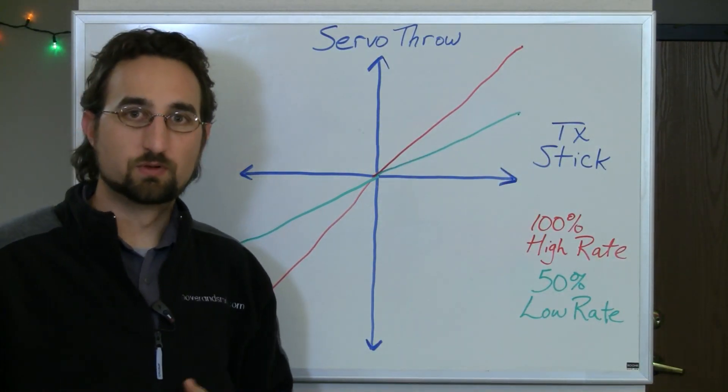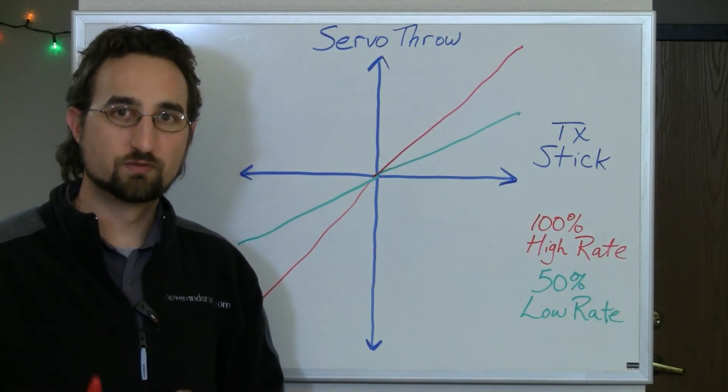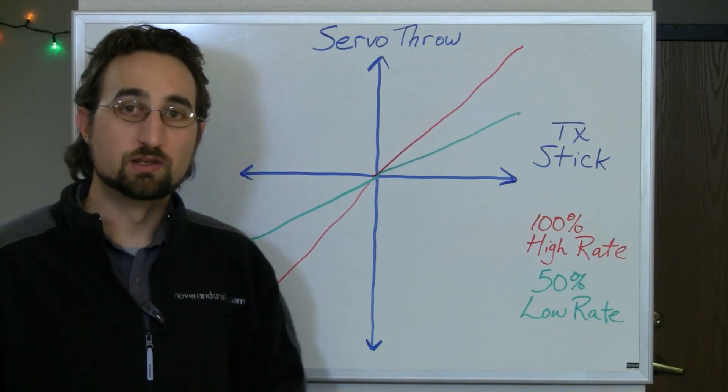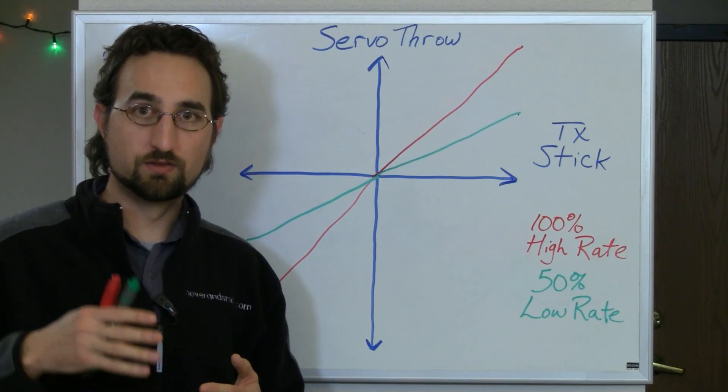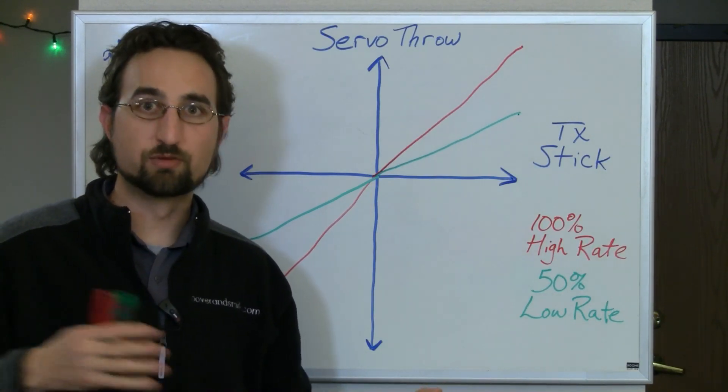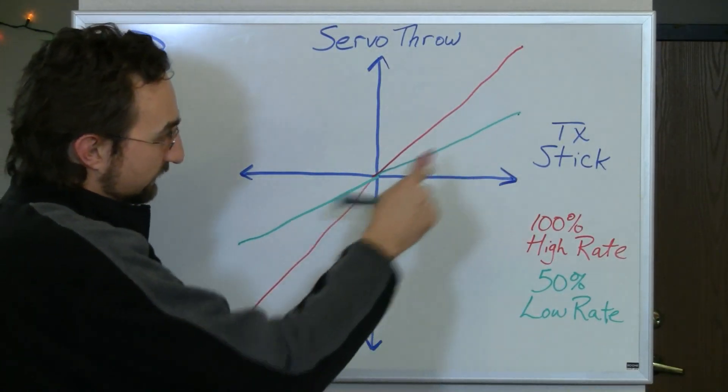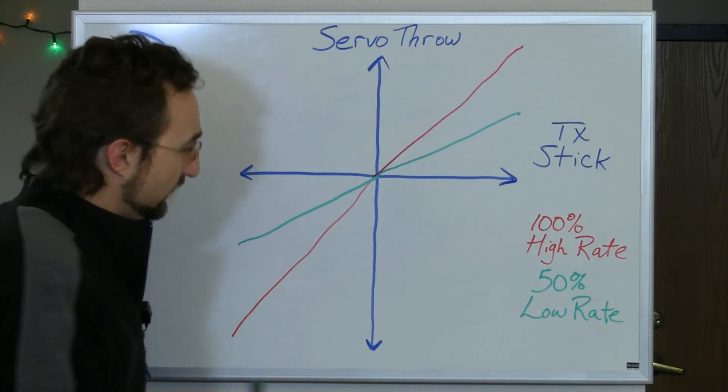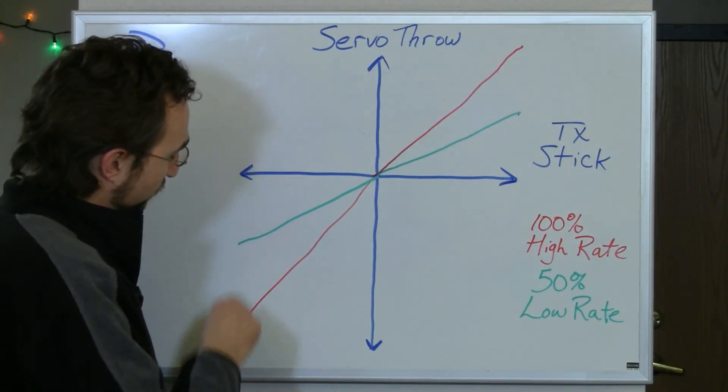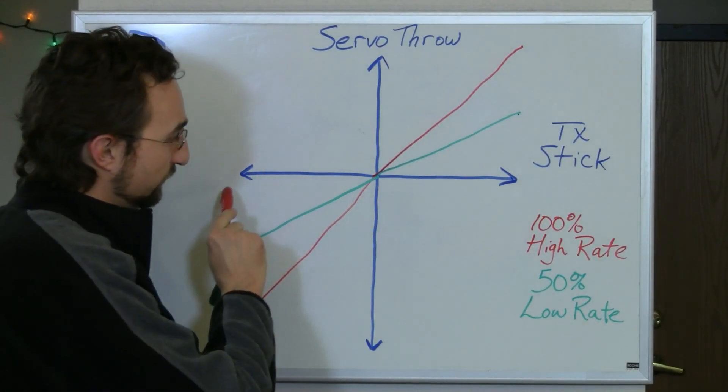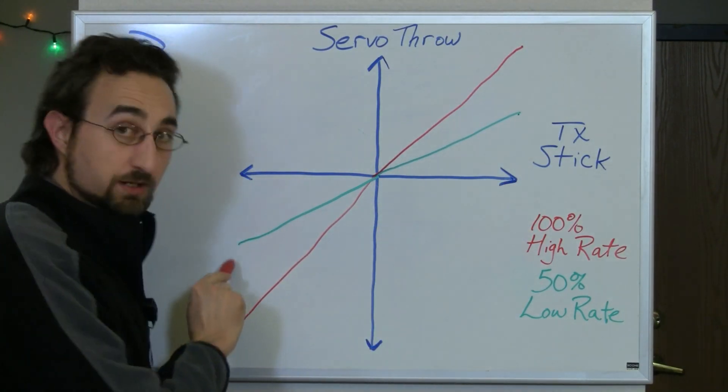This is why we set up a low rate and a high rate on a transmitter, so that with one flick of a switch, we could change one channel servo flight characteristics. And we usually have that separate so that you can control the servo throw for your rudder separate from your aileron and your elevators. These dual rate lines are a really good way of understanding from at least a visual graphing standpoint, how dual rate works. Because your transmitter stick movement is still full, but your servo arm movement is different based on the rate.